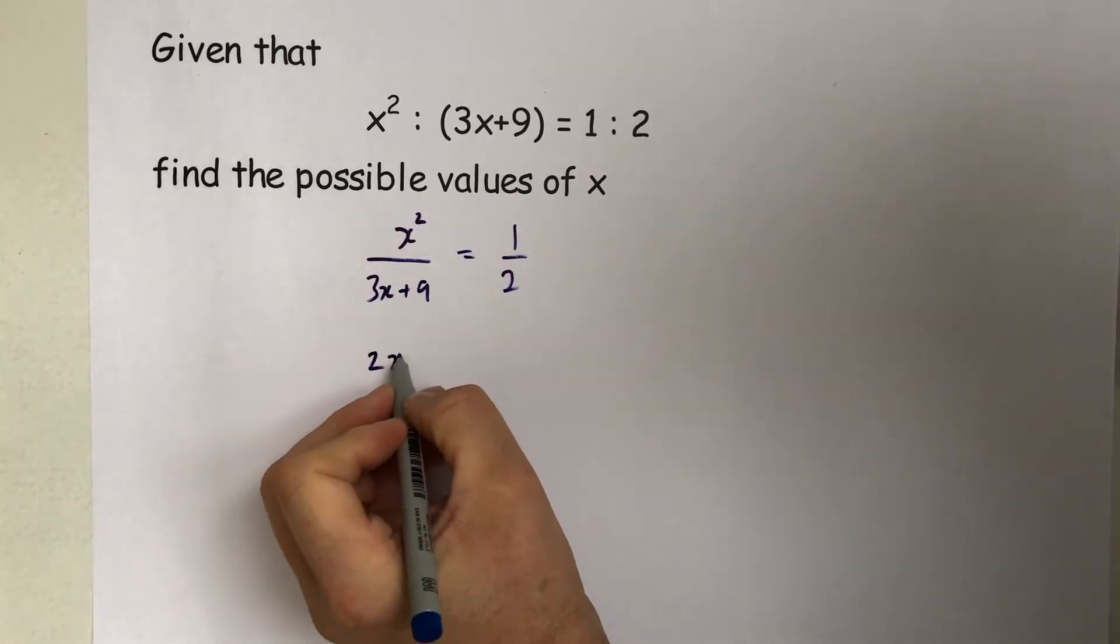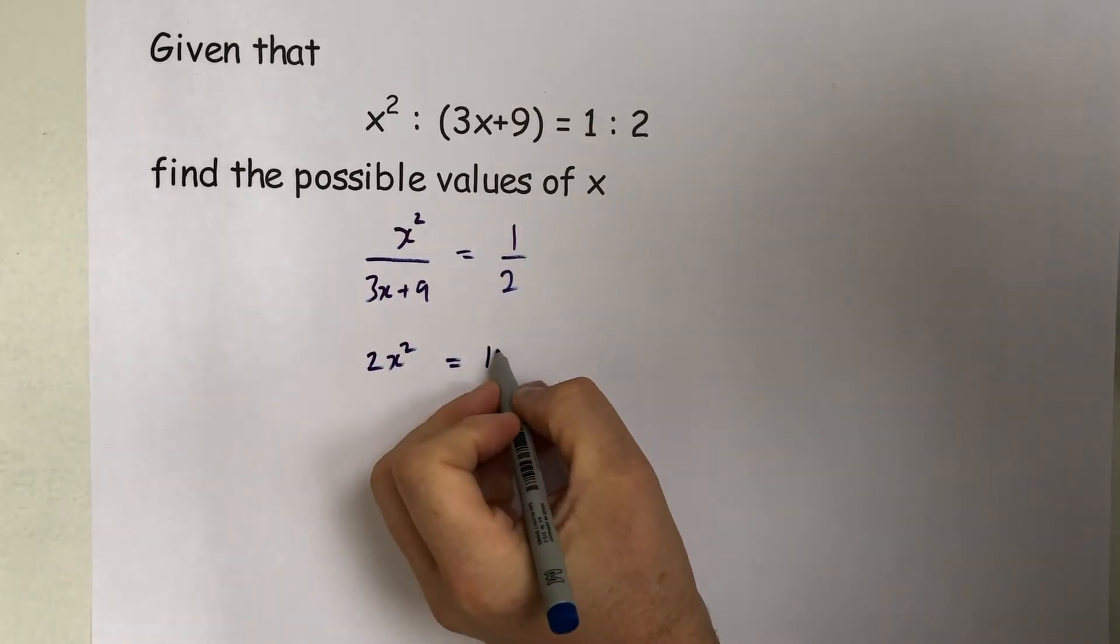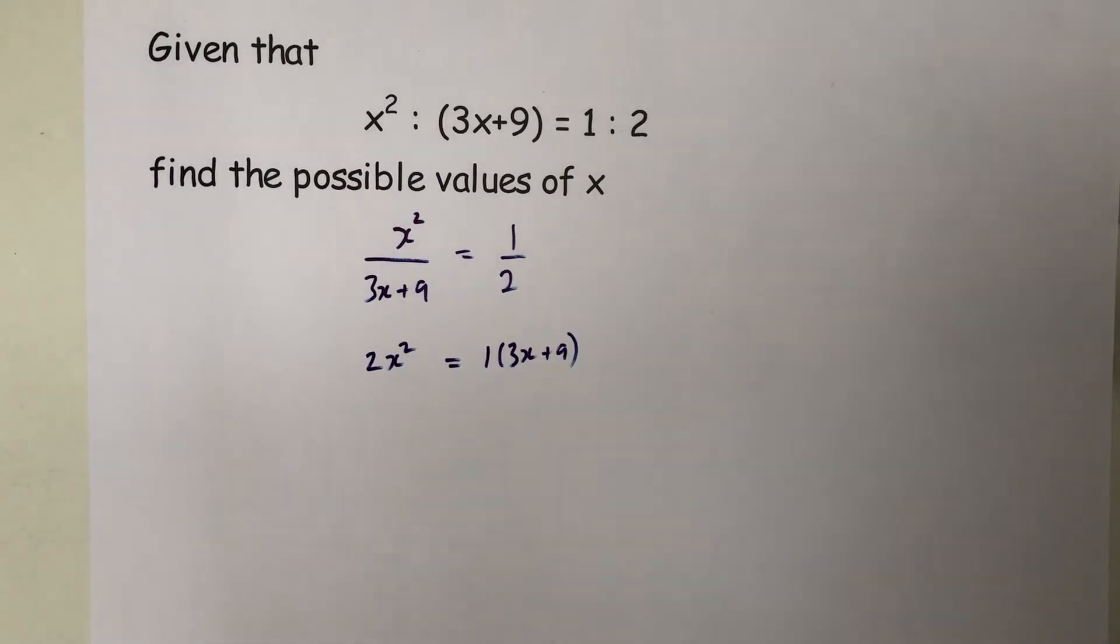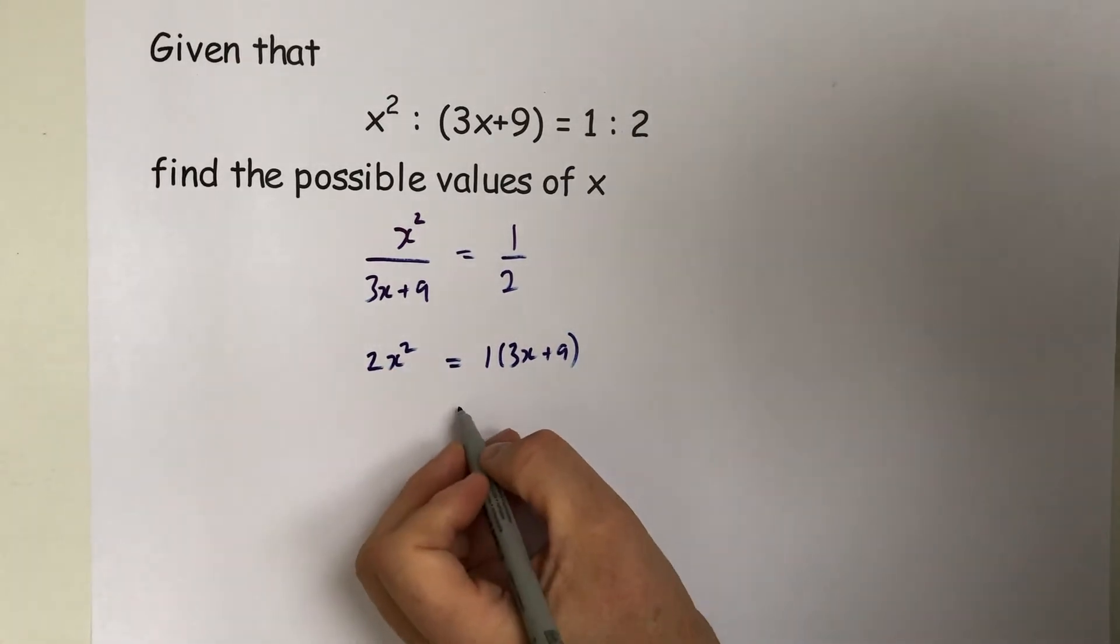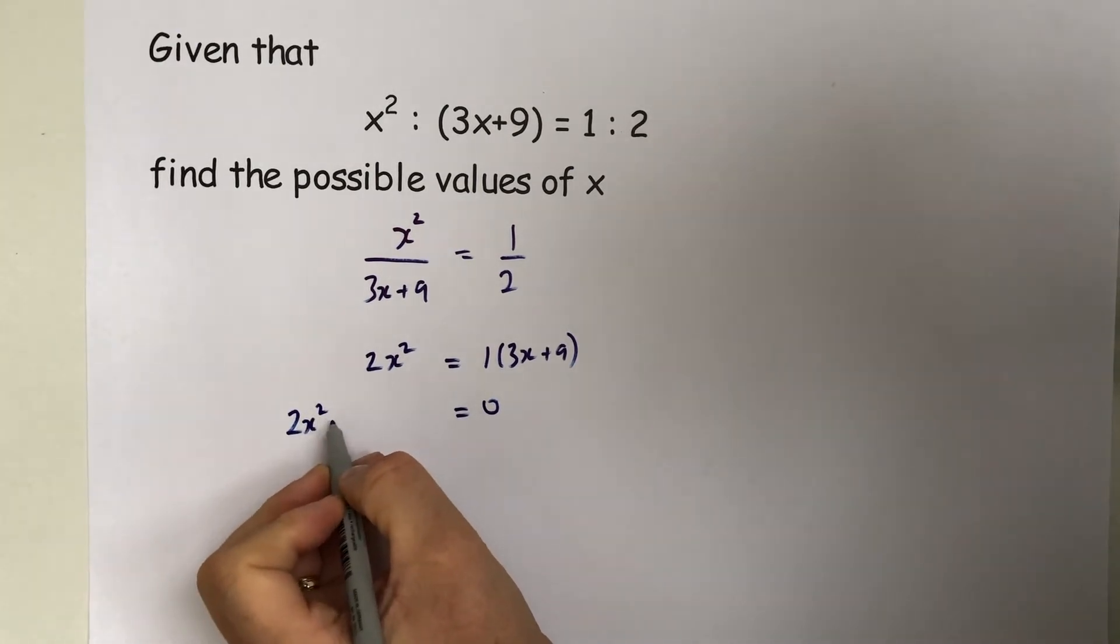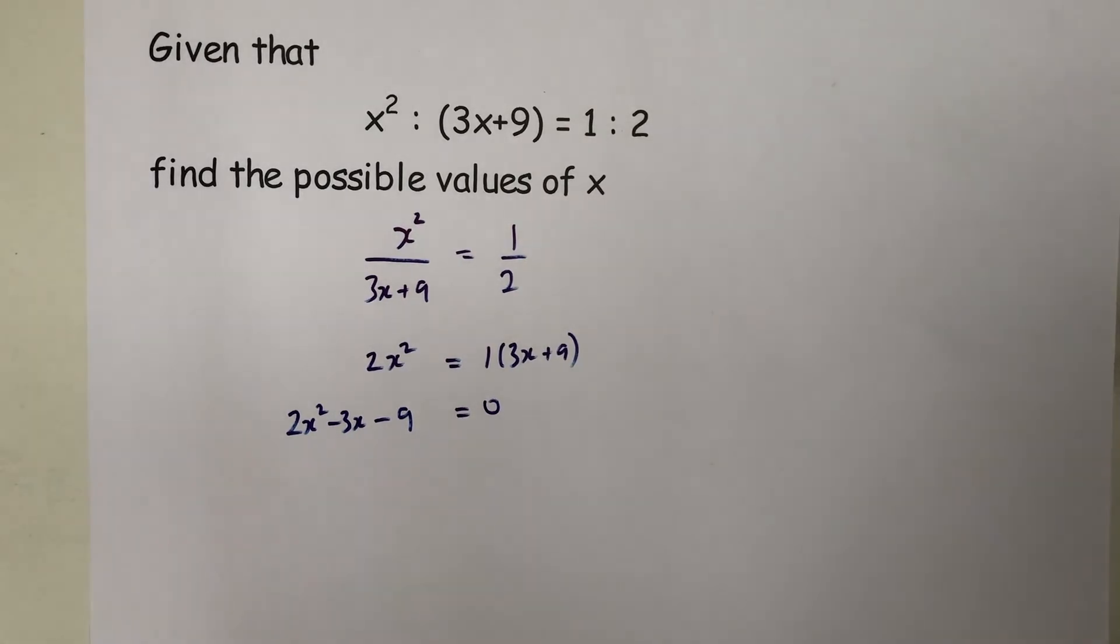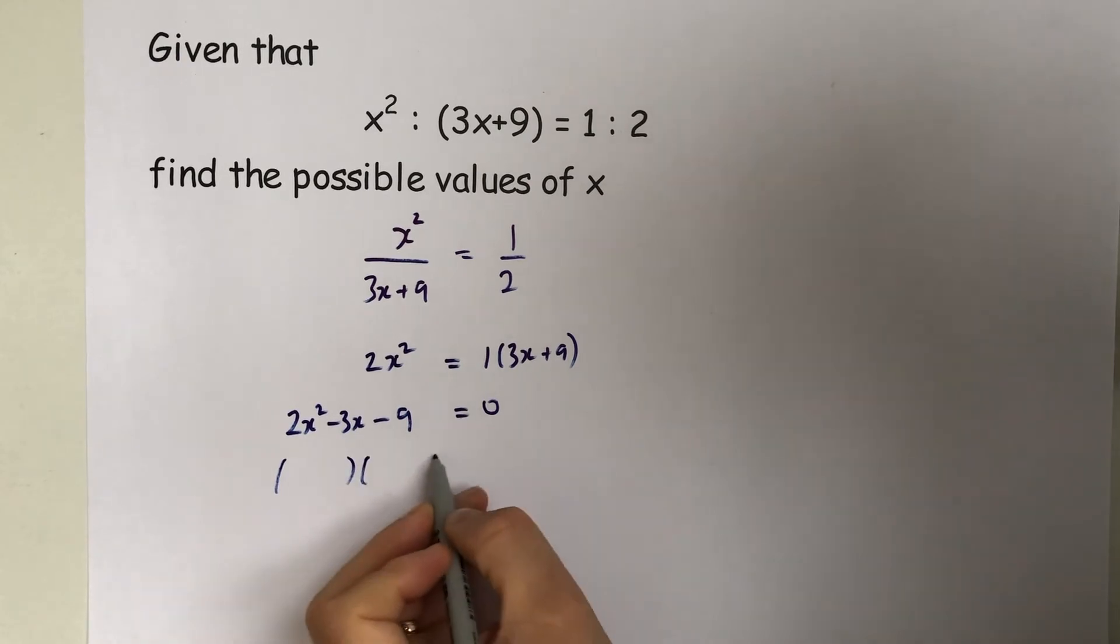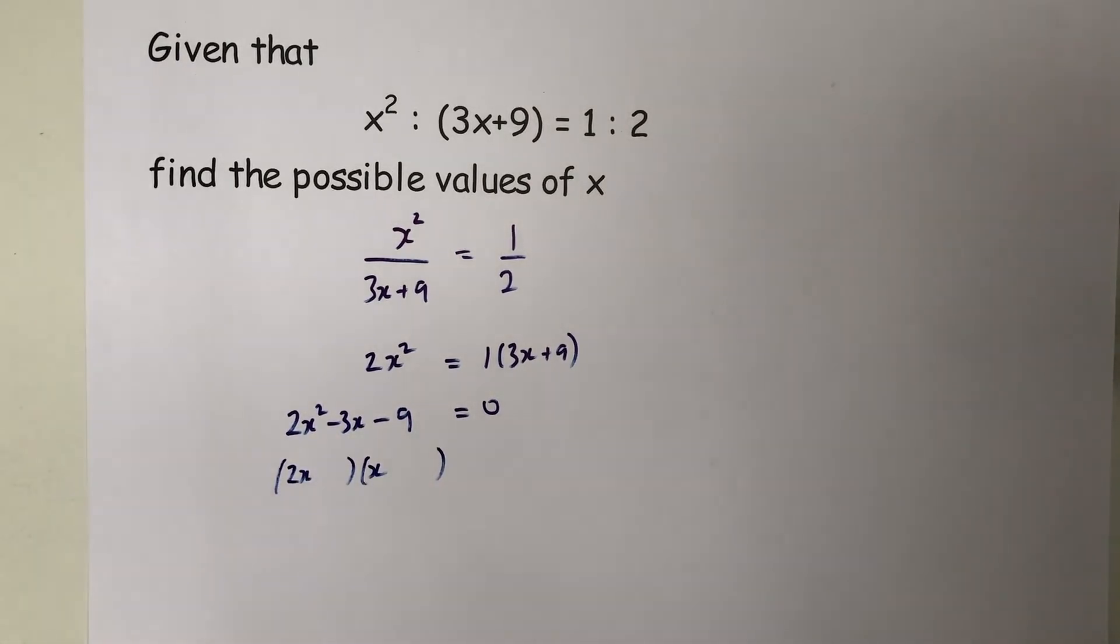...times 2, the 3x plus 9 times 3x plus 9. Next we would rearrange because it's a quadratic to equal 0. So bring the 3x over and bring the 9 over, and then factorize. So 2x squared is 2x times x.